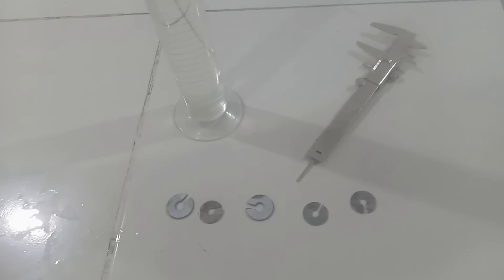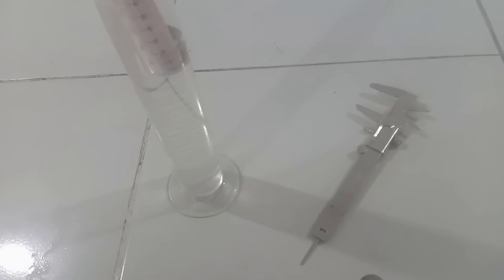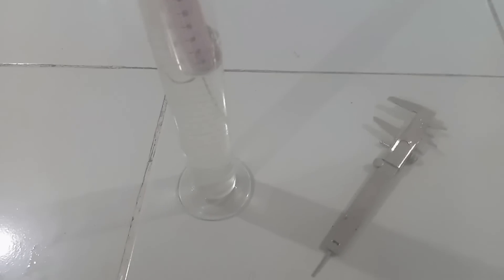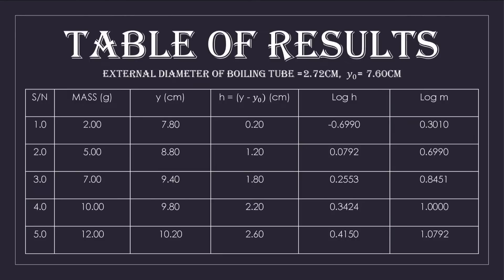Now that we have achieved all that we have been told to achieve, there are some other things we need to evaluate which you are going to be seeing on the table. We are asked to plot a graph of log M against log H. There are some few other questions we are going to be attempting together, and then we will plot our graph. I will tell you about the theory of the practicals.